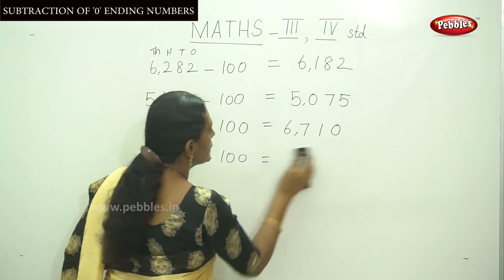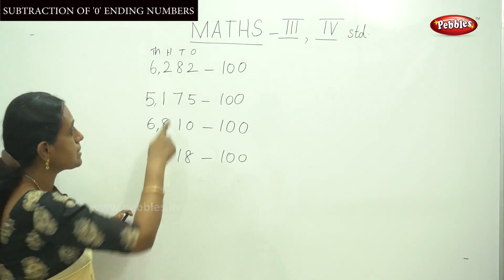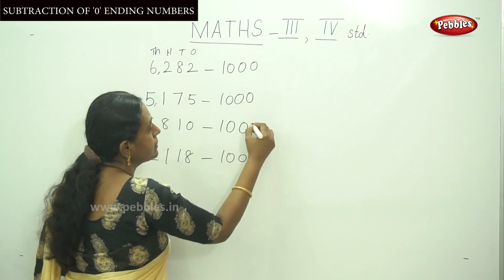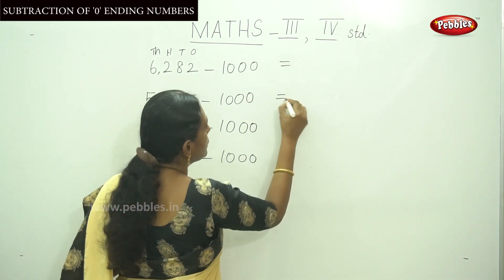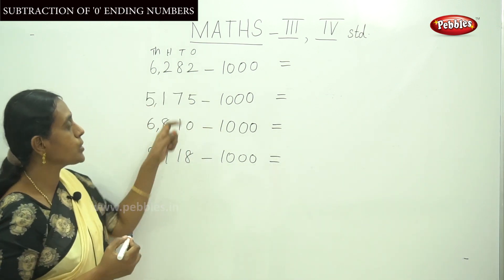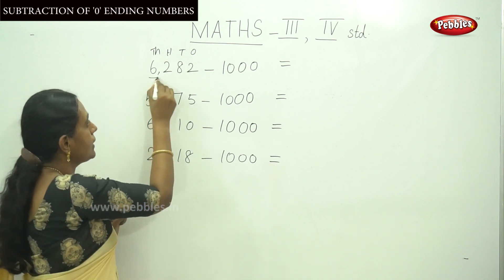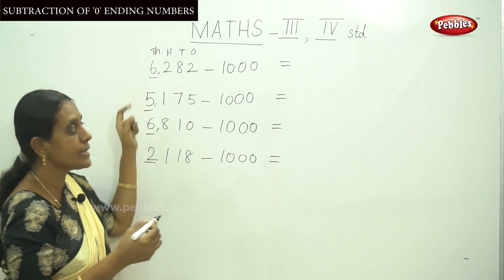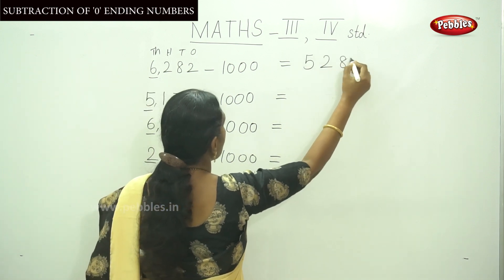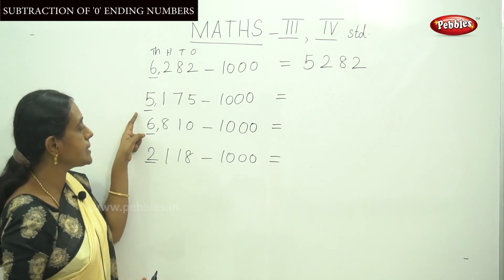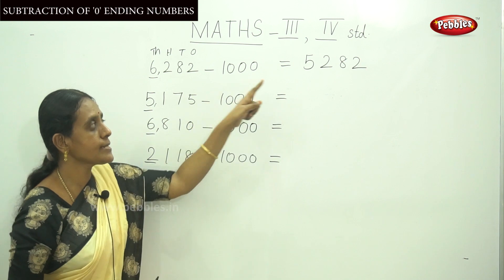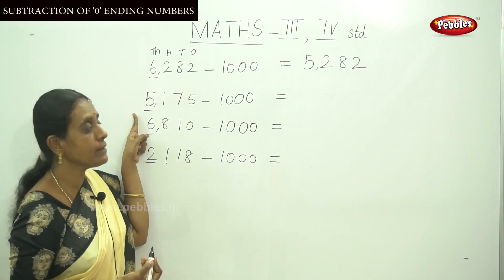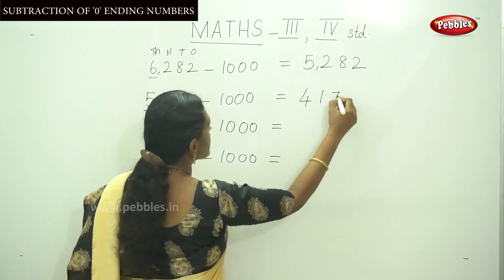We can do the same numbers by changing only the subtrahend. This is the minuend and this is the subtrahend. Suppose you have to subtract one thousand. Focus on the thousands place number. For 6282 minus 1000, underline the thousands digit, which is 6. The before number is 5, so write down 5282. And for 5175 minus 1000, what comes before 5 is 4, so the answer is 4175.